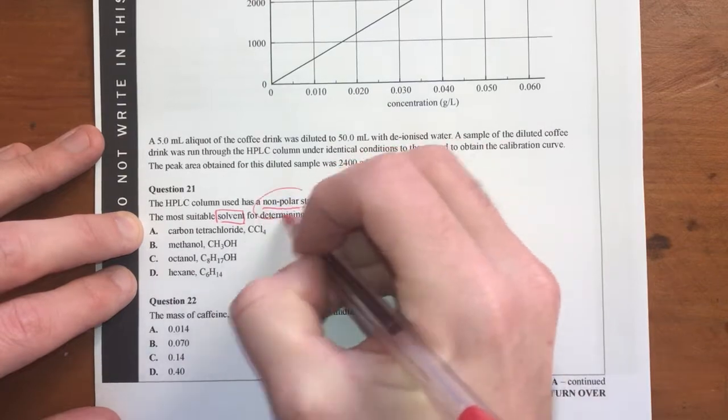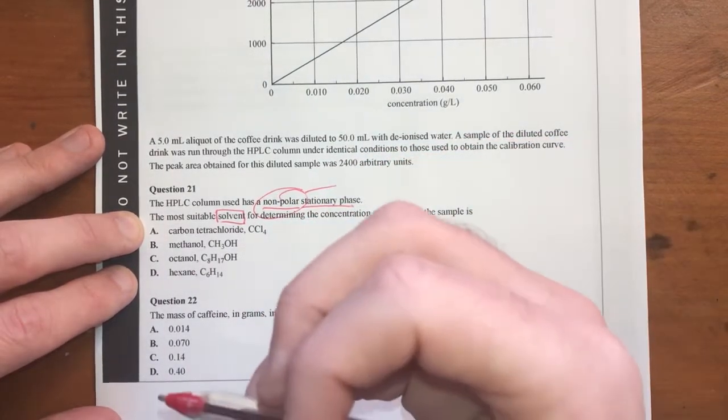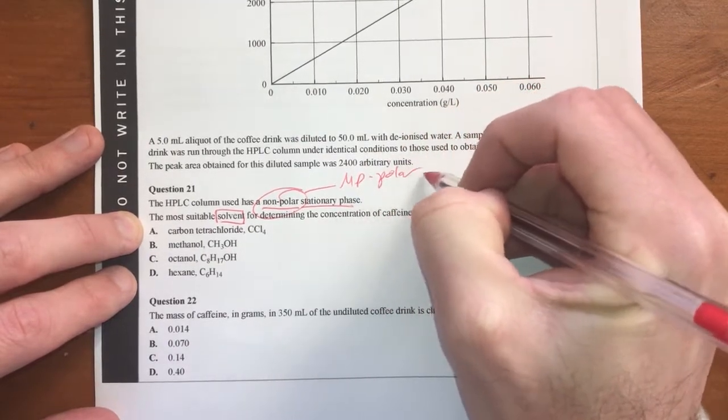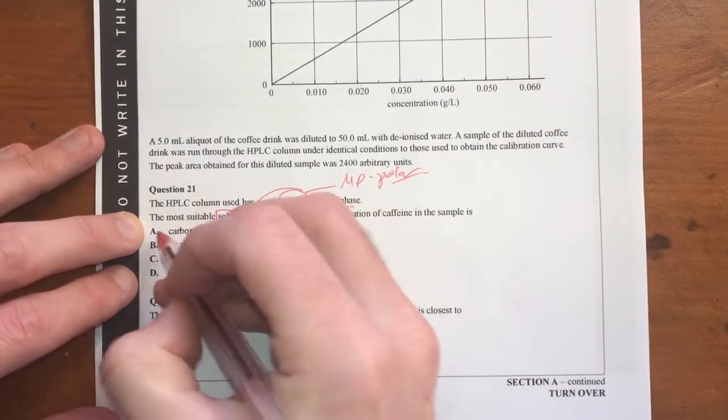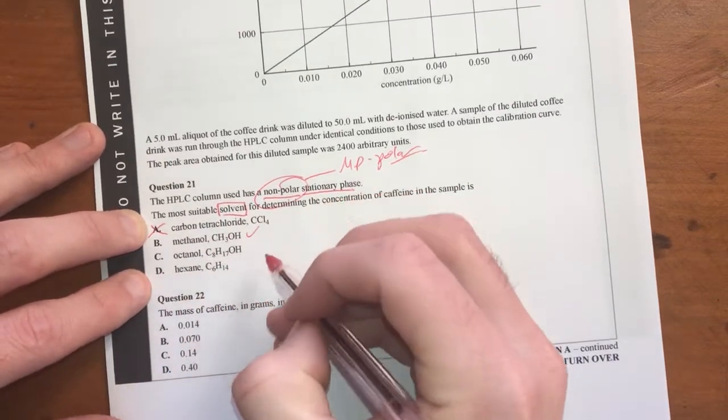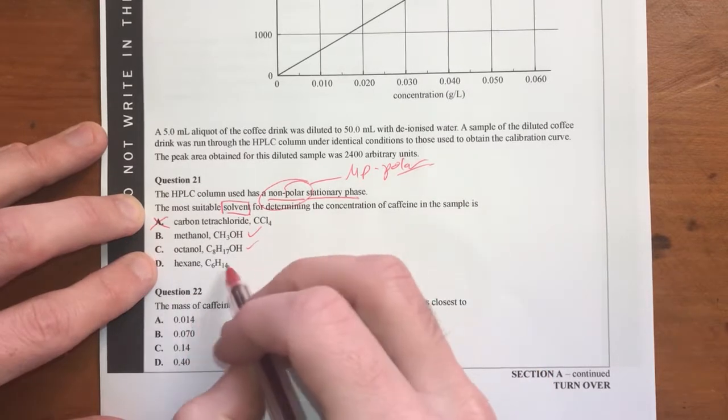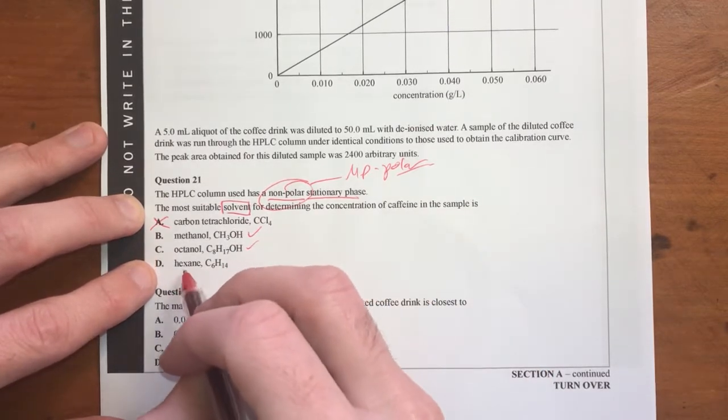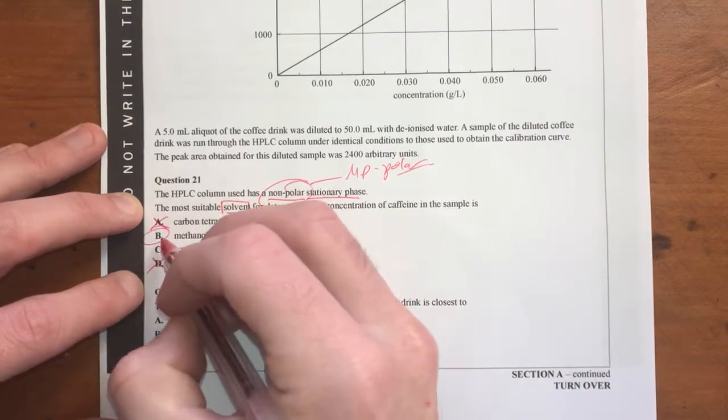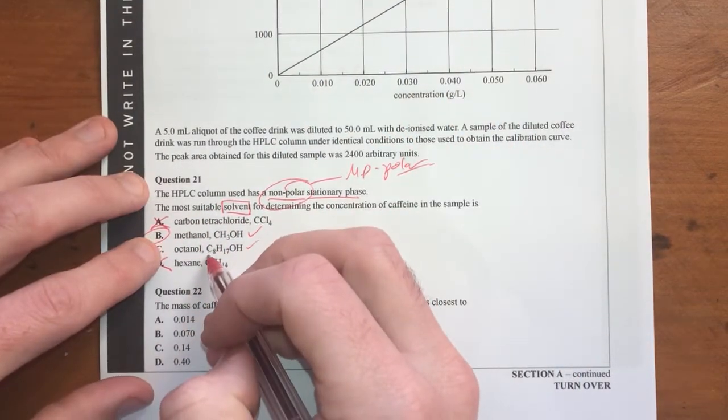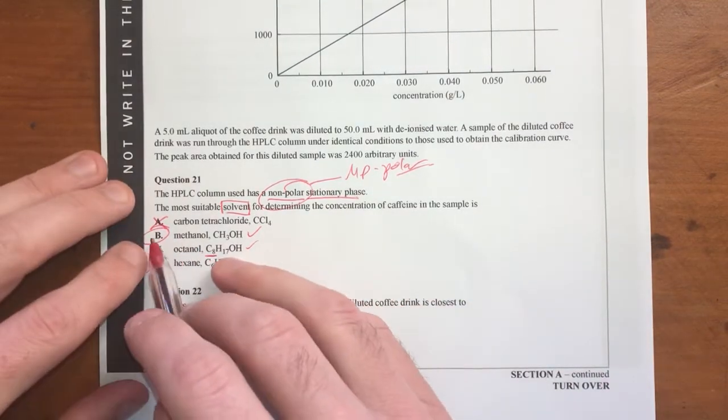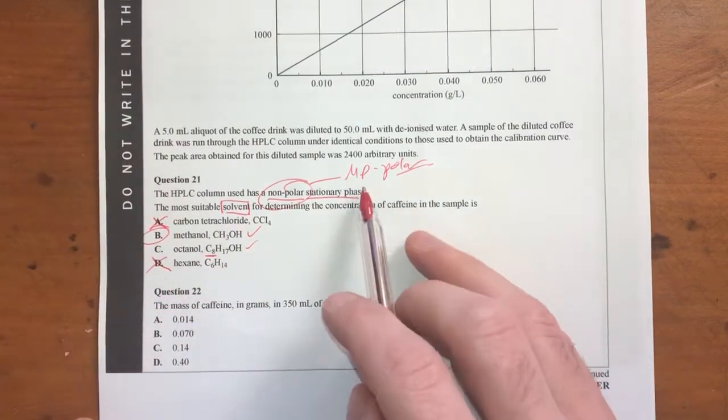So if we got a non-polar stationary phase, the mobile phase should be the opposite of that. So therefore the mobile phase should be polar. So that means it's not going to be the first one, carbon tetrachloride, because that's a non-polar molecule. Methanol looks pretty good. Octanol also is polar a little bit because it's got the OH there. Out of these two, methanol is the most polar because it's got the shortest carbon chain. Octanol having eight carbons in it really reduces the polarity of that molecule there. So definitely B is going to be our answer for our mobile phase.